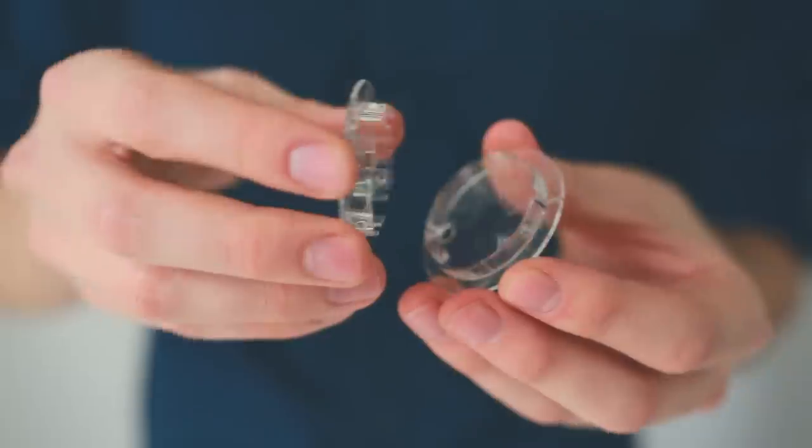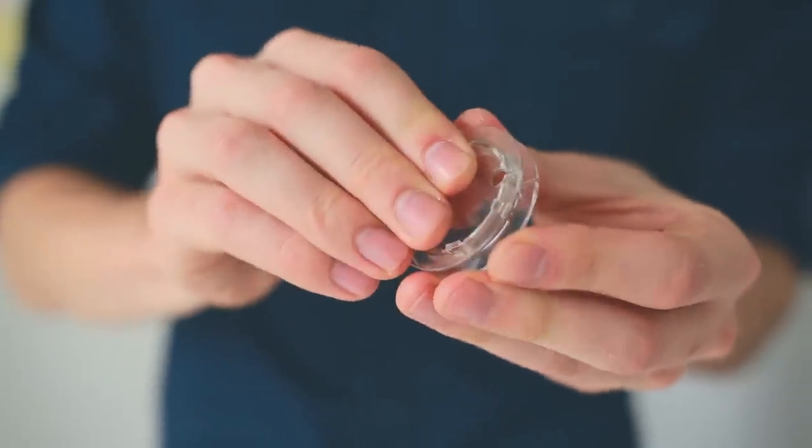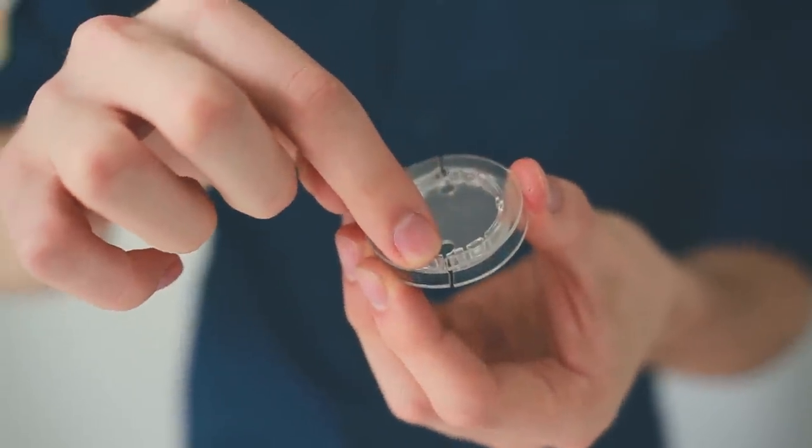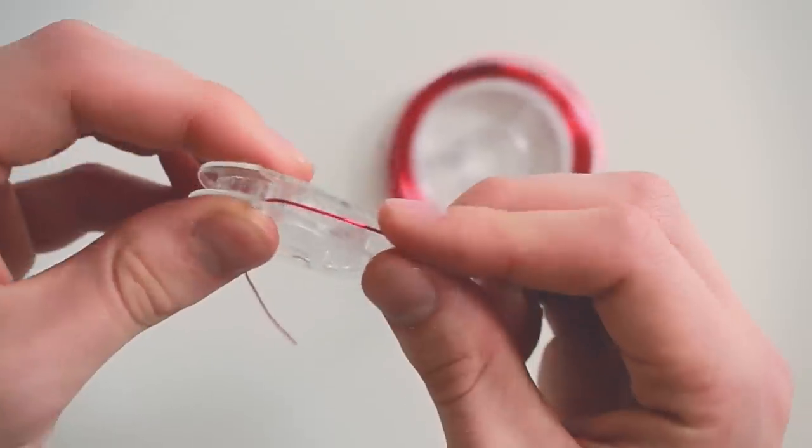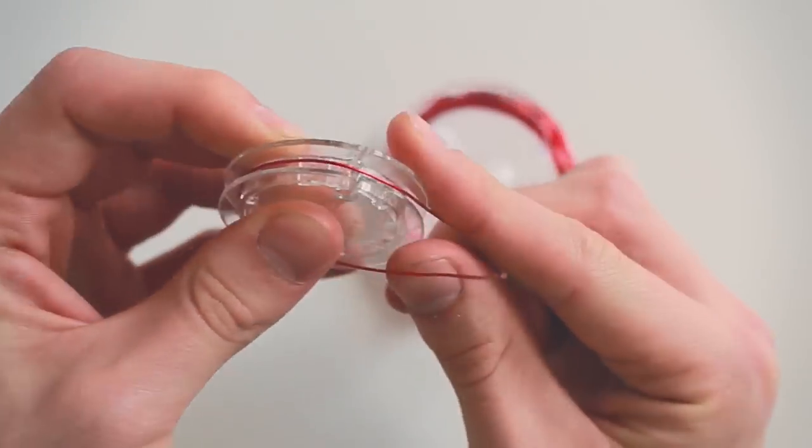Take your two clear spool pieces and snap them together so the notches line up. Take your magnet wire and slip it into one of the notches on your spool. Make sure you leave at least three inches sticking out. Then you can start winding your wire around your spool.